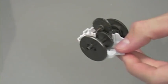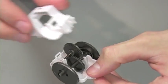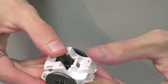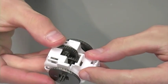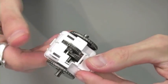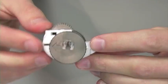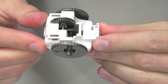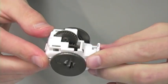And for the last step we're going to take part A9 and we're just going to snap that into place. And your lower gearbox is now complete.